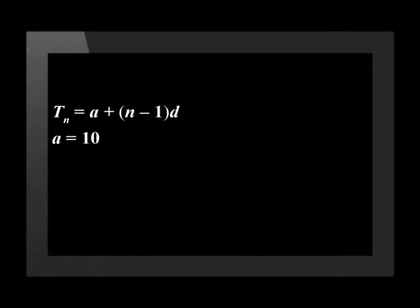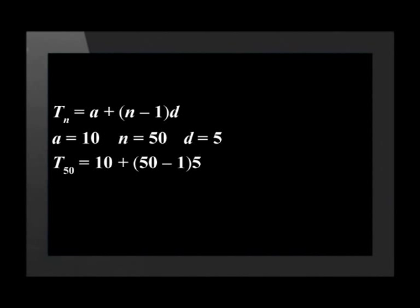Now we need to substitute the values we know into the formula. A is equal to the value of the first term, so that means it has a value of 10. N is the number of circles we're looking for, which is 50. And d is equal to 5. We substitute this in to get that the 50th term is equal to 10 plus, open brackets, 50 minus 1, closed brackets, times 5. And we find that term 50 is equal to 255.